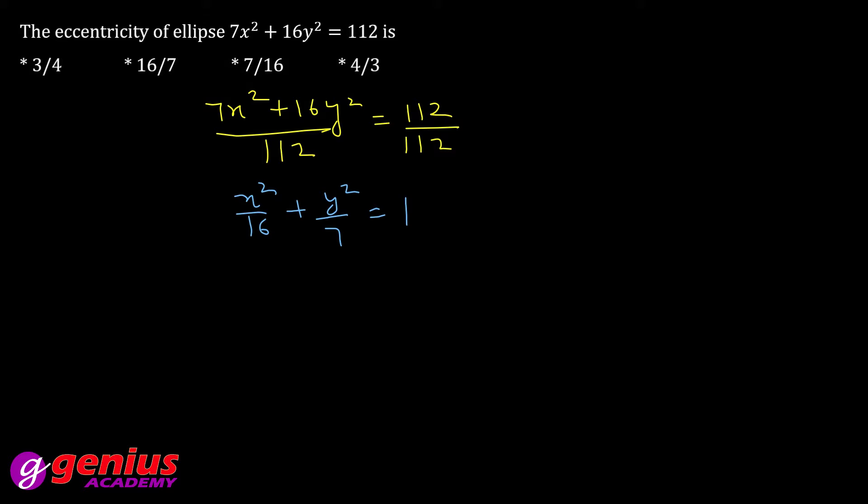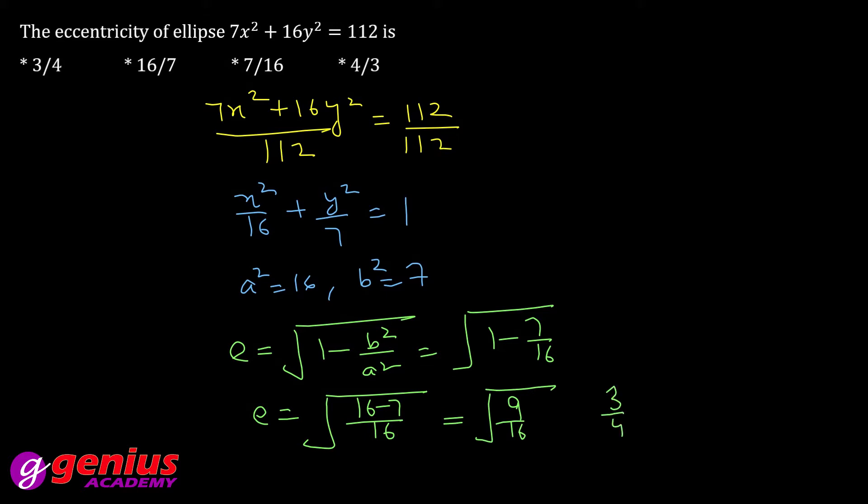Let us compare the general equations. a square is 16, b square is 7. We know that eccentricity is 1 minus b square over a square. So, 1 minus b square is 7, it is 16, so 16 minus 7 over 16. 16 minus 7 is 9, over 16. The final is 3 by 4. The eccentricity of the ellipse is 3 by 4.